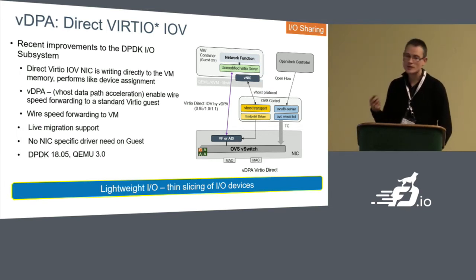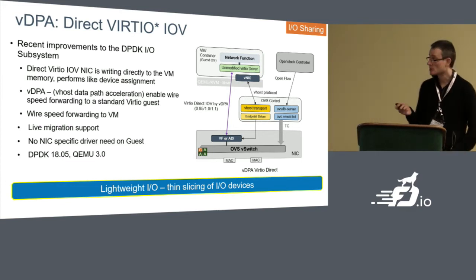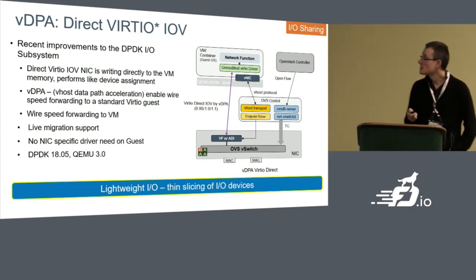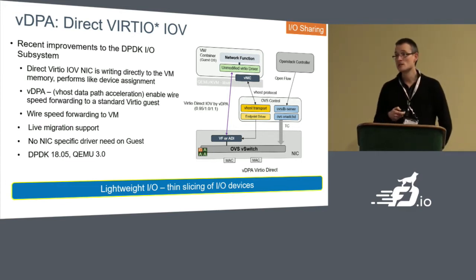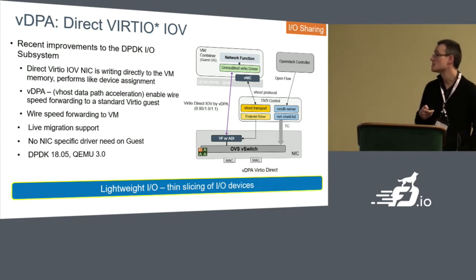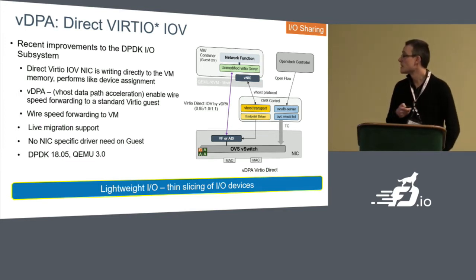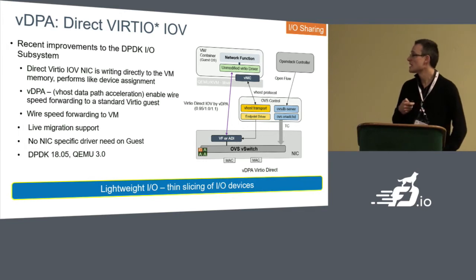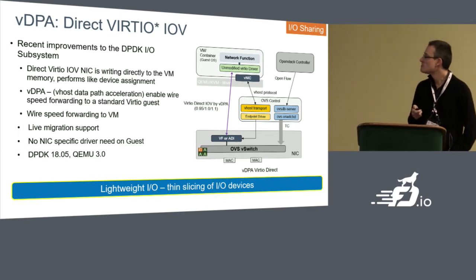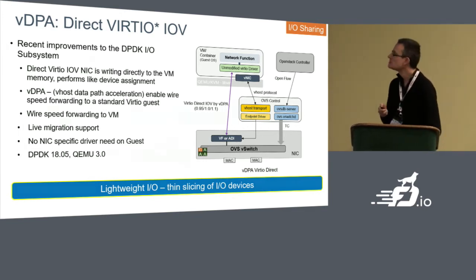Those are three things we've done recently in DPDK to make it more lightweight: a way to use memory more optimally, ways to be more lightweight in I/O, and more lightweight I/O options. Now we'll move on to FidoVPP.